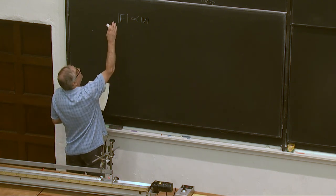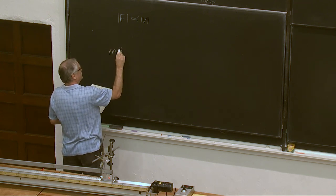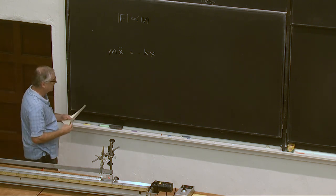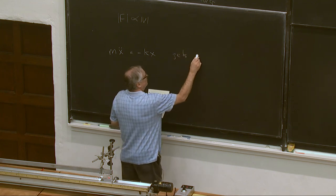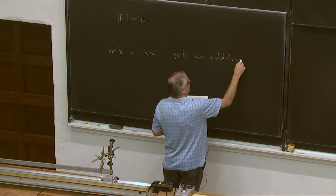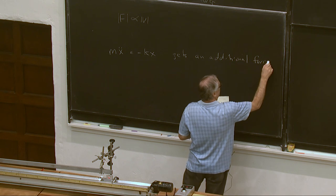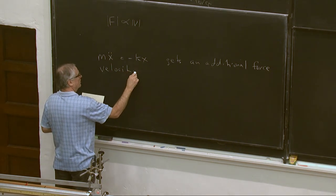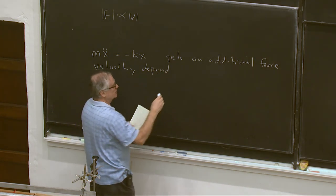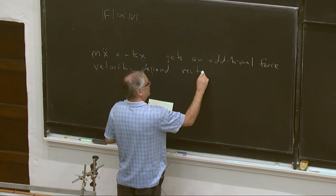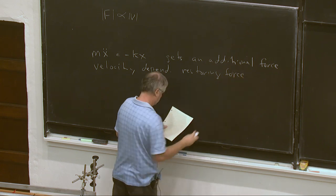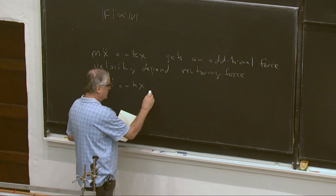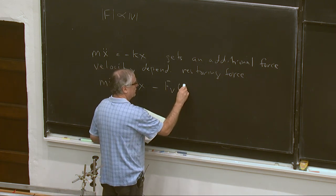So, our original equation that says M x double dot equals minus k times x, x is a function of time, gets an additional force term. So, this is a force equation, which is a velocity dependent force, which is resisting the motion. So, it's a restoring force.